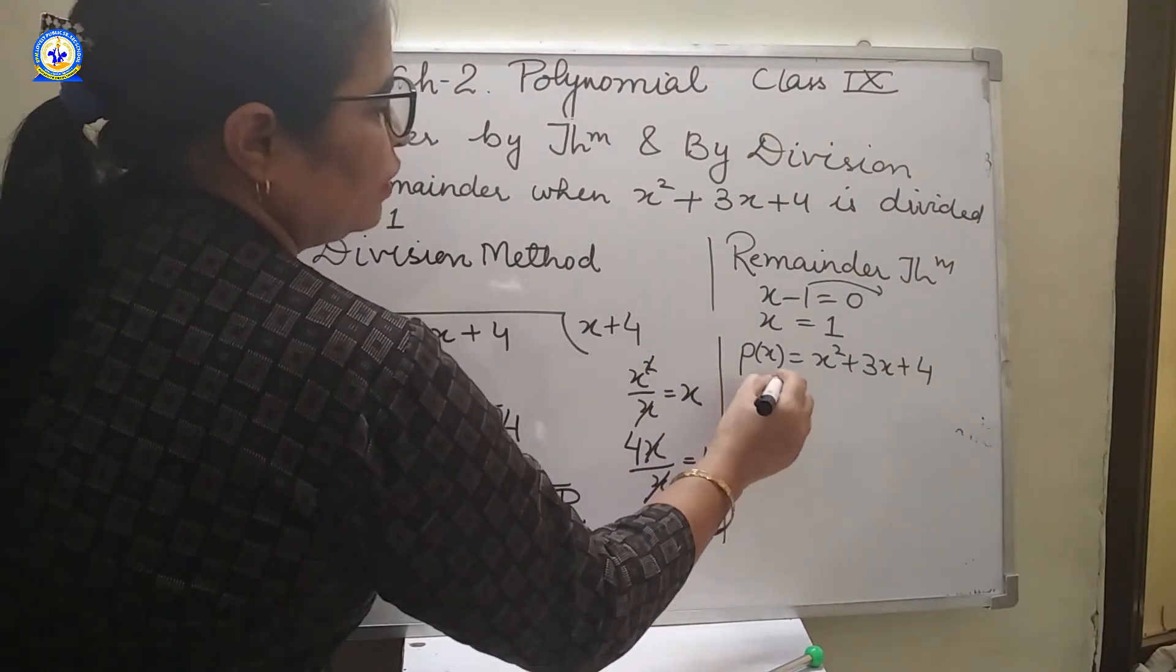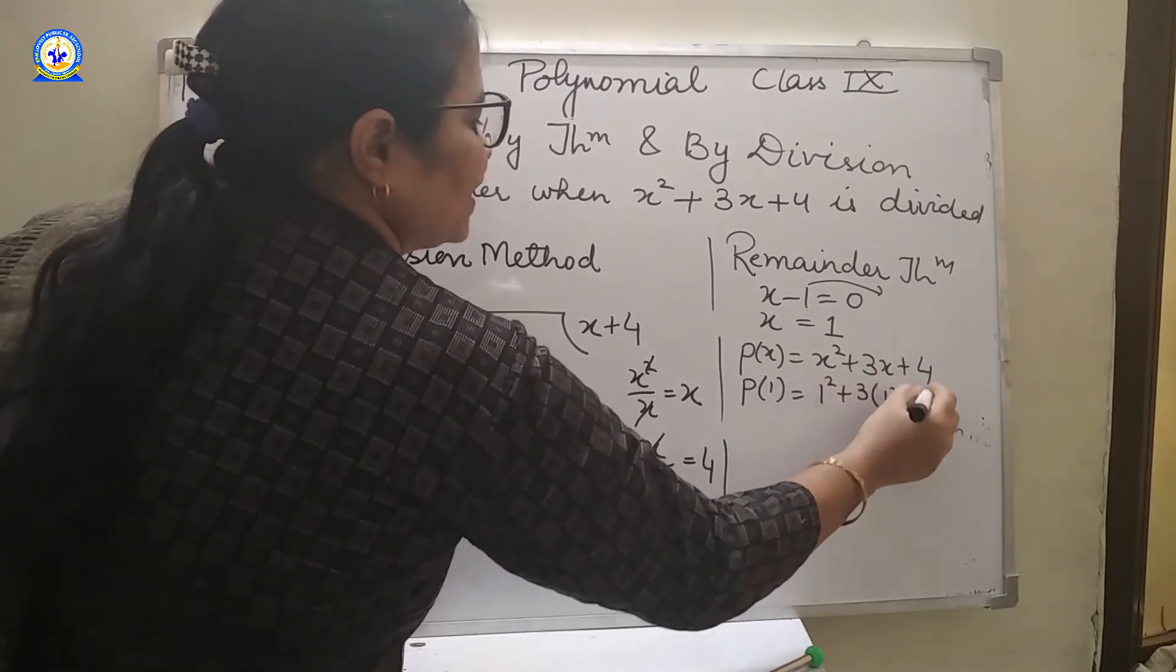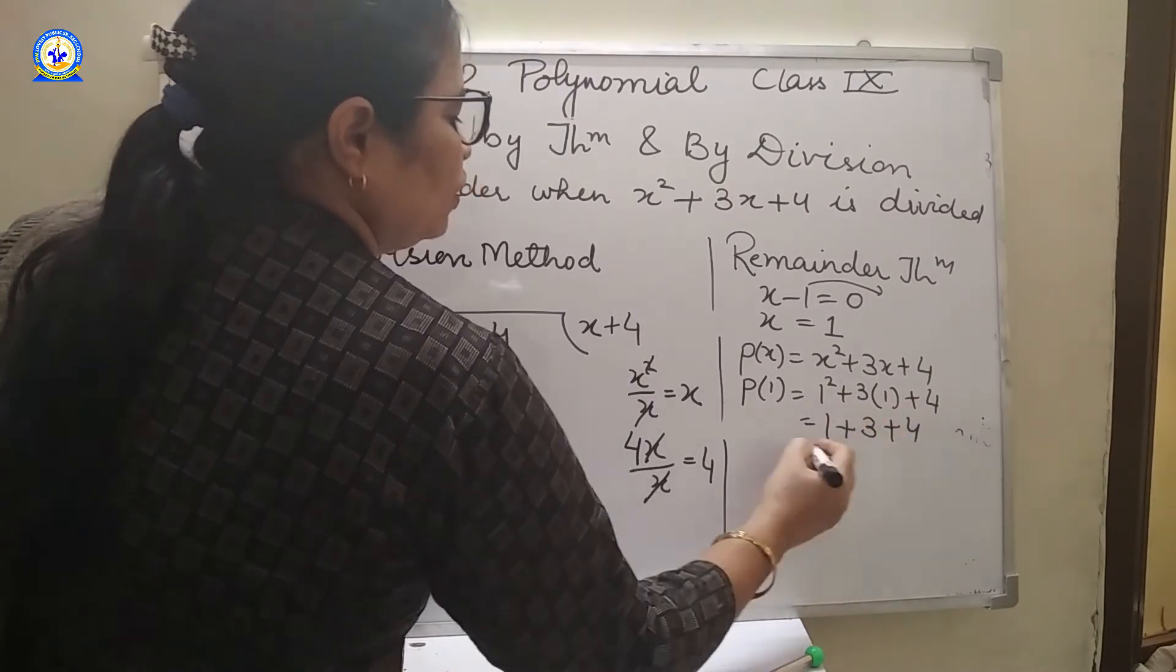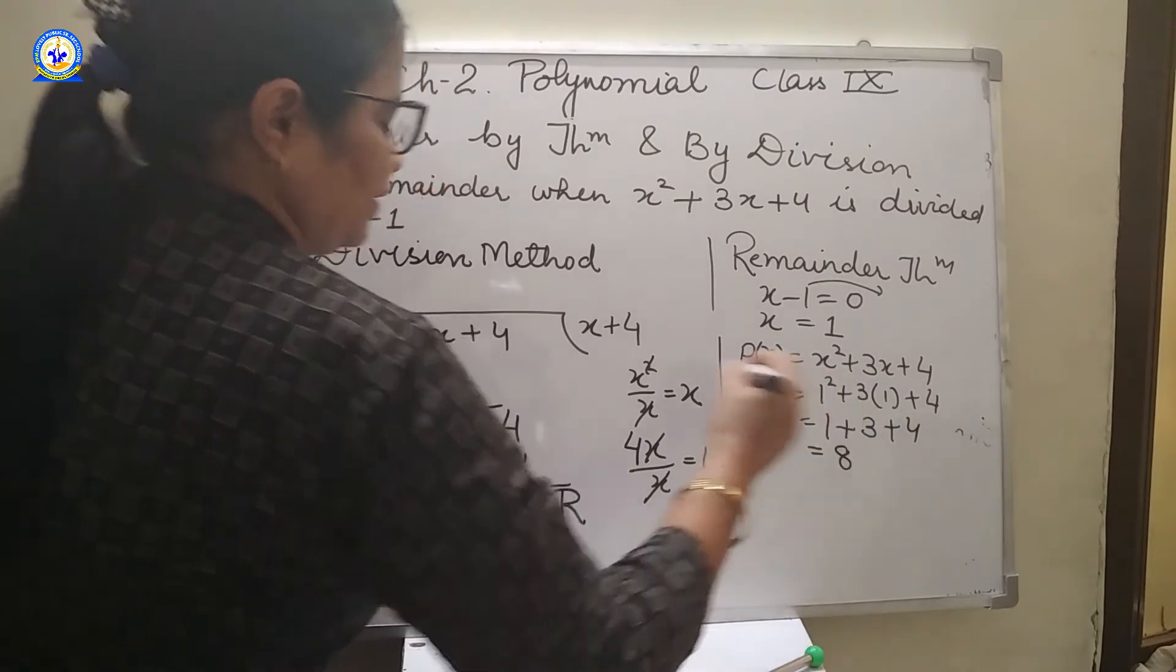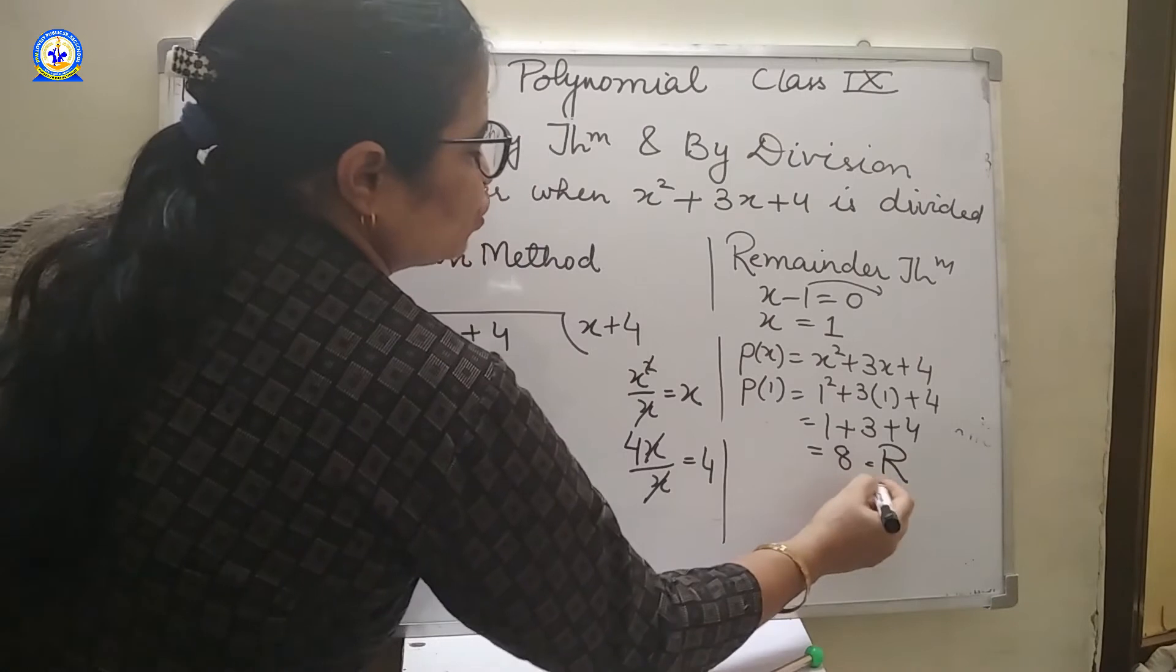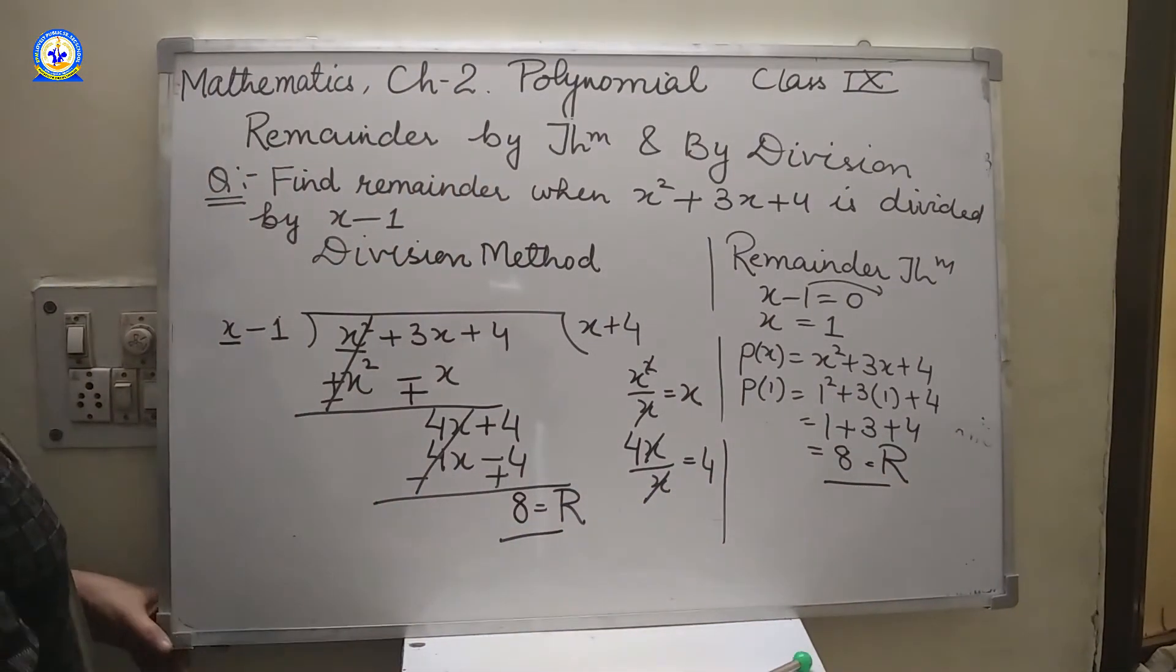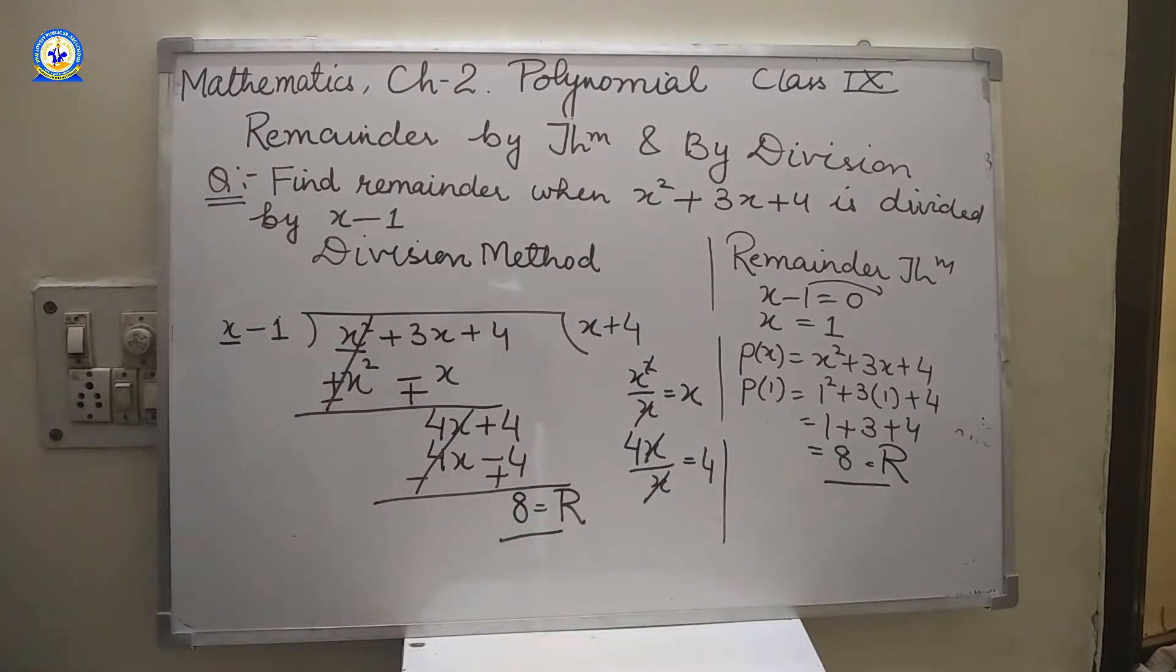Now we will put x equal to 1 in this. That means P1, 1 square plus 3 into 1 plus 4. 1 plus 3 ones are 3 plus 4. 1 plus 3 is 4, 4 plus 4 is 8. This is again remainder. So we can see that by remainder theorem also and by division also, the remainder is same.